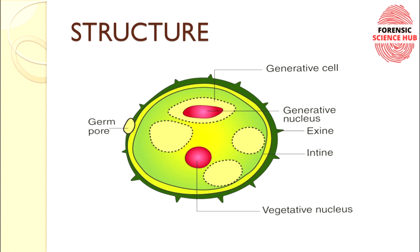There are two main layers: exine and intine. Exine is the outermost layer and it has tiny spikes over it, which help in attachment to various surfaces. These spikes might help in attaching to the body of the suspect — on their clothes, hair, or footwear.